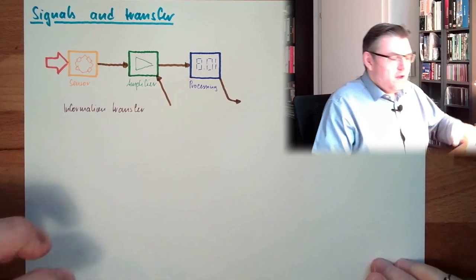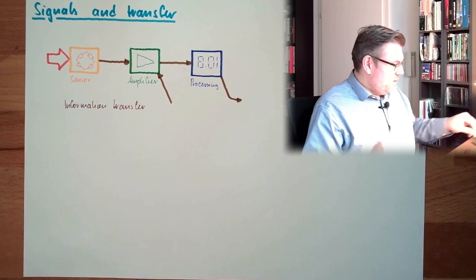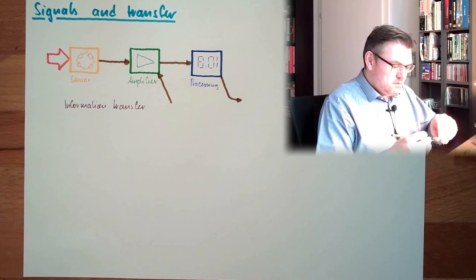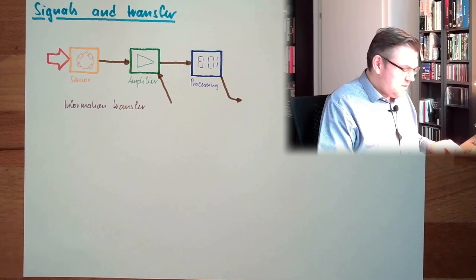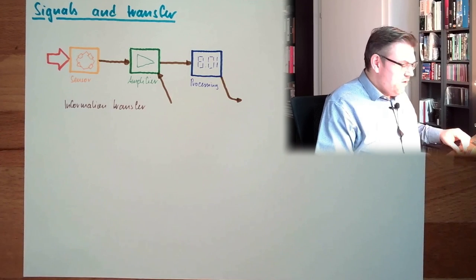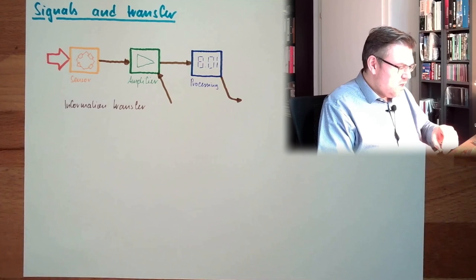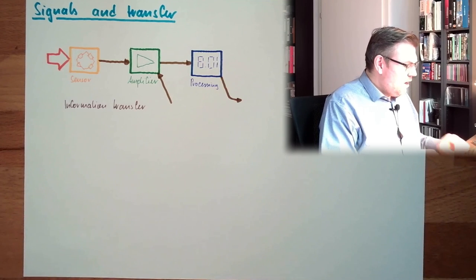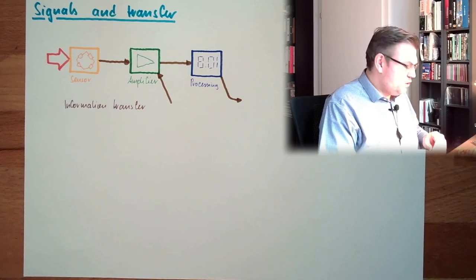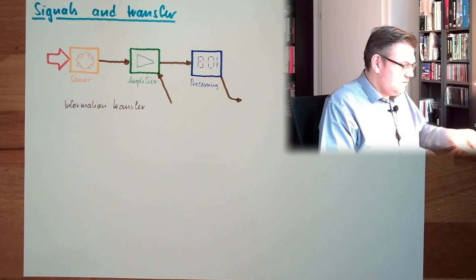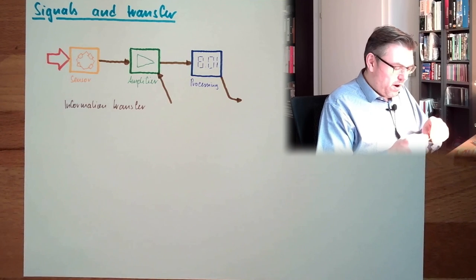So even if we are local and only measure local measurements, we have to transfer information from one point to the other. So this means we have to think about how to code information in our measurement signals. There is no way around this.